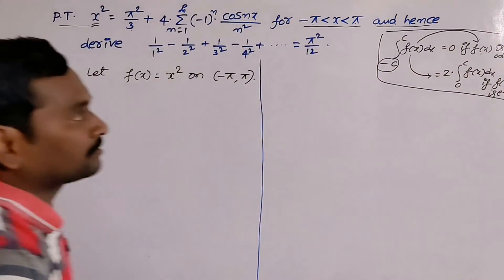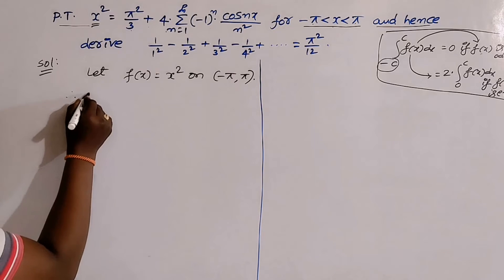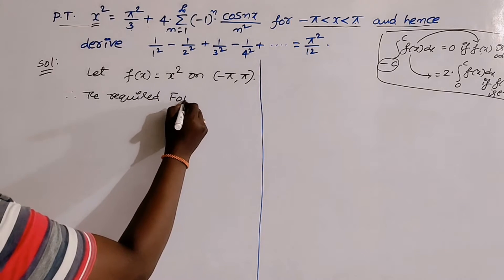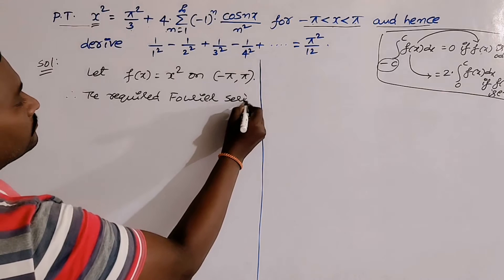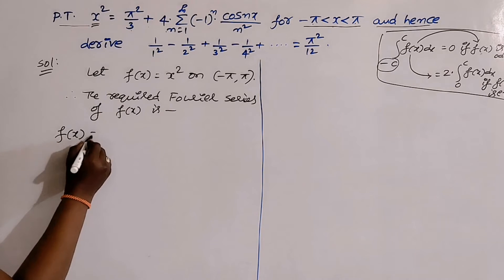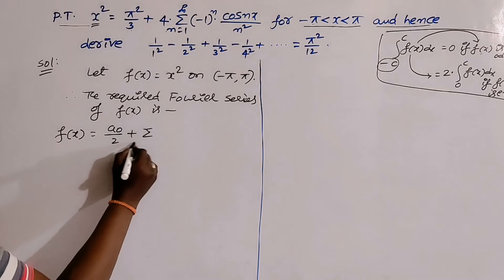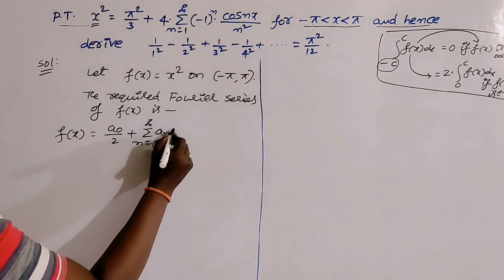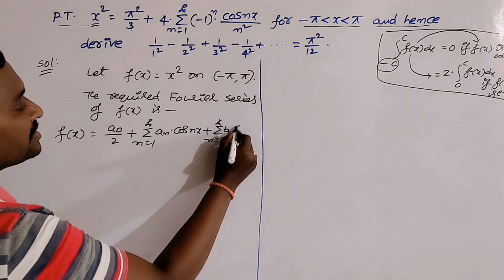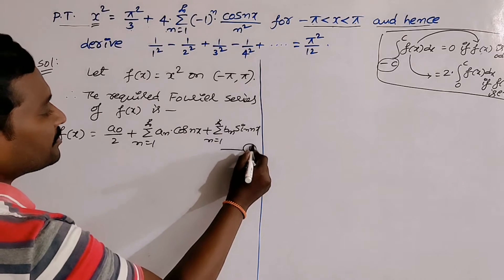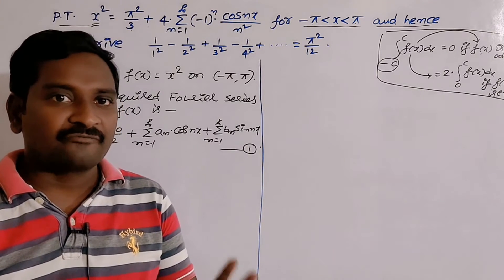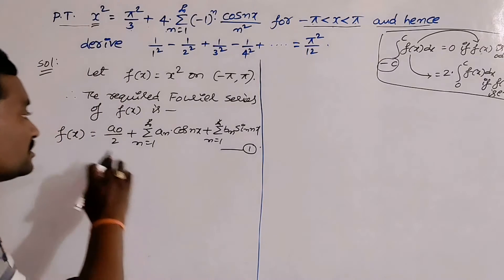This formula is very, very important. The required Fourier series of f(x) is: f(x) = a₀/2 + Σ(n=1 to ∞) aₙ cos(nx) + Σ(n=1 to ∞) bₙ sin(nx). Take this as equation (1). It is enough to find the values of a₀, aₙ, and bₙ, then substitute all three values into this formula.